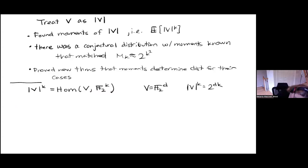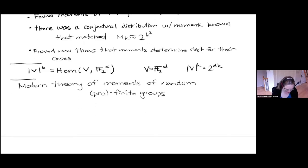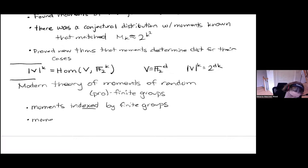So in the modern theory of moments of random finite groups, whereas before the moments were indexed by natural numbers k, here the moments are indexed by finite groups. The moments themselves are still real numbers. The G-th moment of a random group X is the average number of homomorphisms from X into G. So we're counting how many group homomorphisms there are from our random object to some fixed object G that is indexing the moment.